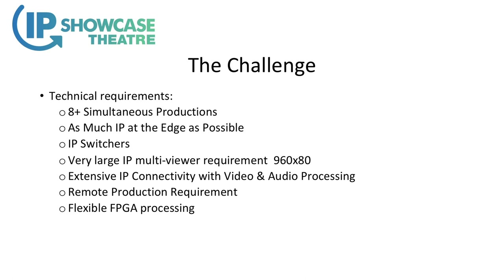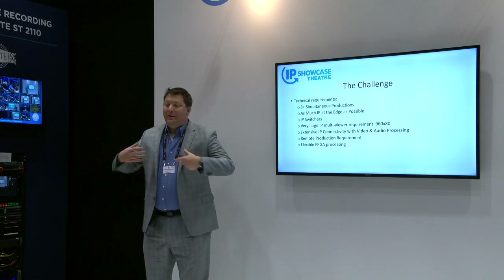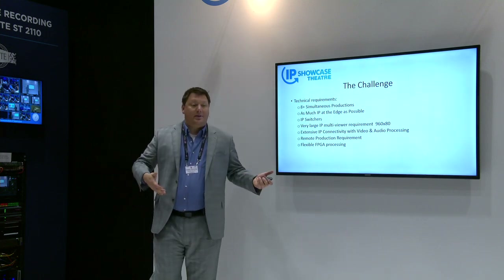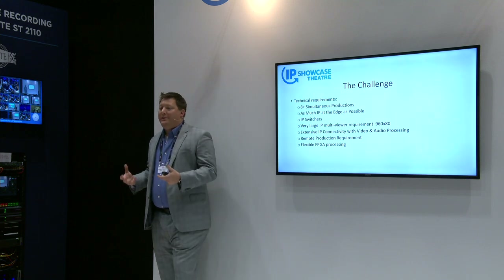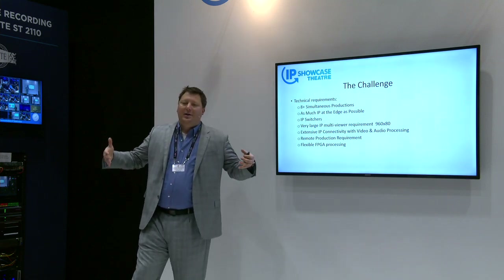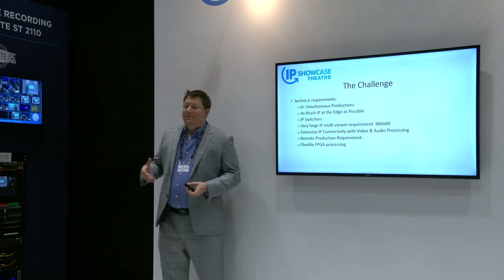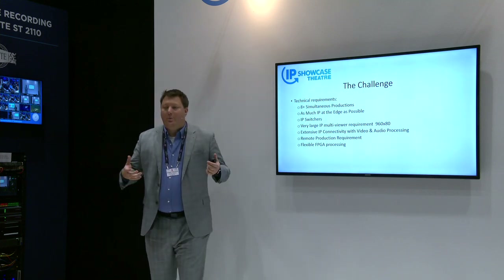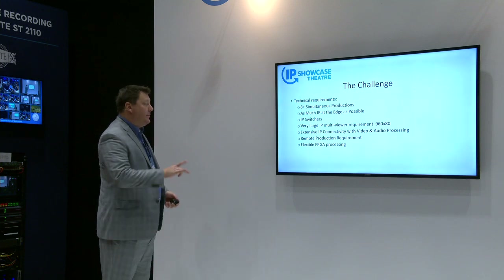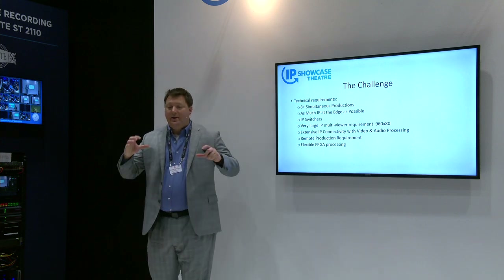One of their requirements was as much IP at the edge as possible. We don't want to be in the world where we sell gateways. As a manufacturer I love selling gateways, but as a customer, that's capital that may not be used in two, three, four, five years once everything is direct IP. The concept of IP at the edge means you want your cameras to be IP, your switchers to be IP, your multiviewers to be IP — as much at the edge as possible so you don't need gateways. IP switchers reinforced that: they said they don't want a traditional SDI switcher or a hundred gateways for all their switchers — they want native IP switchers. That's actually pretty tough because there aren't many manufacturers that can do the entire switcher ST 2110 native without gateways or external processing.